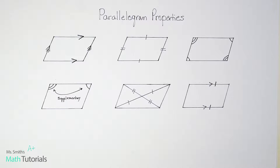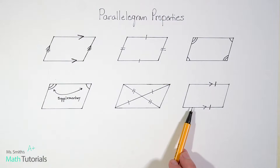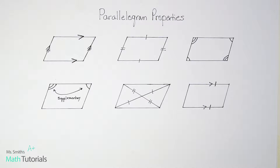It's important to note that most people think of a parallelogram and they think of this kind of slanted rectangle shape. That's definitely what comes to mind for me. But it's important to note that parallelograms actually have four different types: squares, rectangles, rhombus, and rhomboid. Those are the four different types of parallelograms.